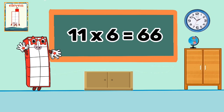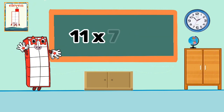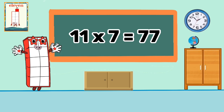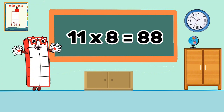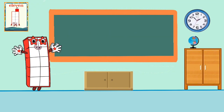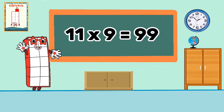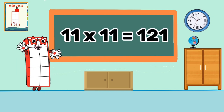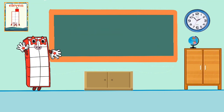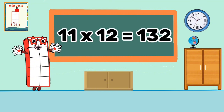11 times 6 equals 66. 11 times 7 equals 77. 11 times 8 equals 88. 11 times 9 equals 99. 11 times 10 equals 110. 11 times 11 equals 121. 11 times 12 equals 132.